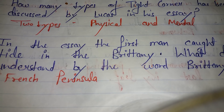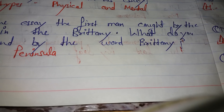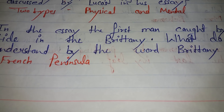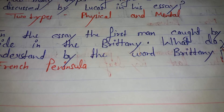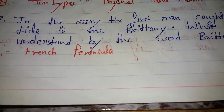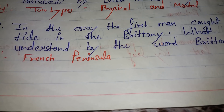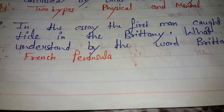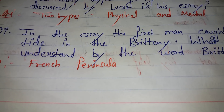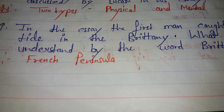In the essay, the first man was caught by the tide in Brittany. What do you understand by the word Brittany? In the essay there are four friends talking about their physical tight corners. Brittany is a French peninsula — so if the question asks what Brittany is, the answer is French peninsula.